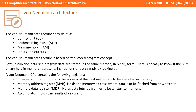To recap: the von Neumann architecture consists of a control unit, an arithmetic logic unit, a memory unit, and inputs and outputs. It is based on the stored program concept — both instructions and program data are stored in the same memory in binary form. There is no way to know if the binary held in memory represents instructions or data simply by looking at it; it has to be brought into the processor and decoded. It contains the following registers: the program counter, holding the address of the next instruction to be executed; the memory address register, holding the address of where data is to be fetched or stored; the memory data register, holding the data fetched from or to be written to memory; and the accumulator, holding the result of calculations.